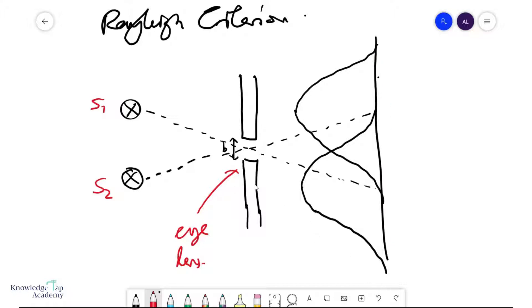Now Rayleigh is trying to say at what point will you be able to properly distinguish these two light sources as two separate light sources.